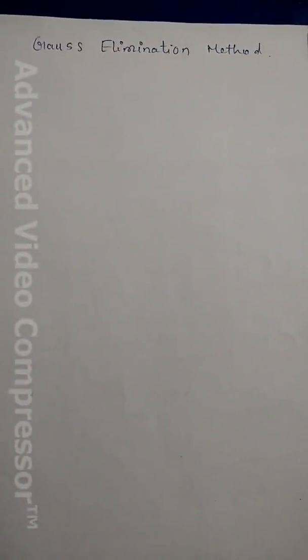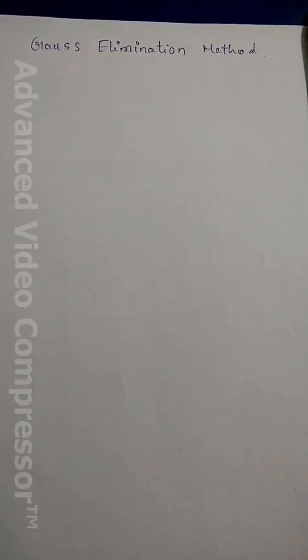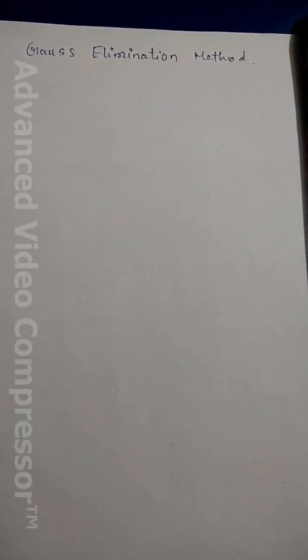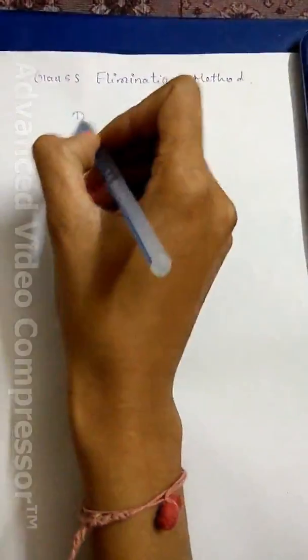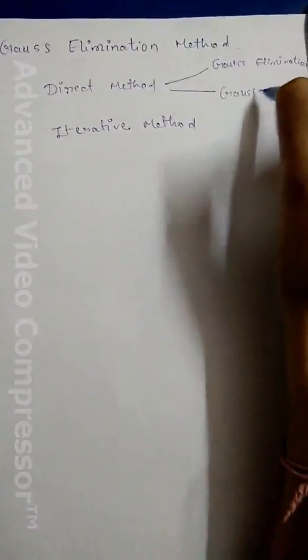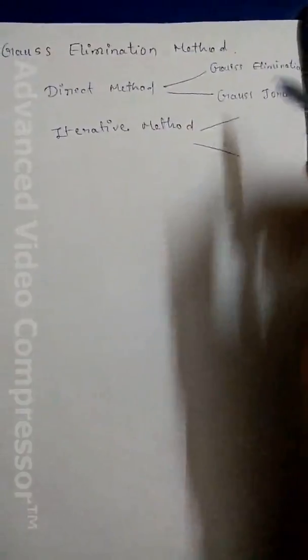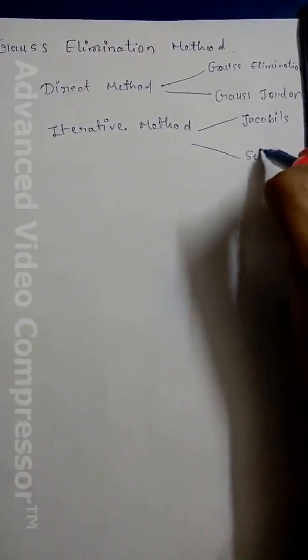Today I am going to teach you the Gauss elimination method. It is a method for solving a system of non-homogeneous linear equations. There are two approaches: direct methods and iterative methods. In direct methods we have Gauss elimination and Gauss-Jordan method. In iterative methods there are Jacobi's method and Seidel's method. Today I am going to teach Gauss elimination method.